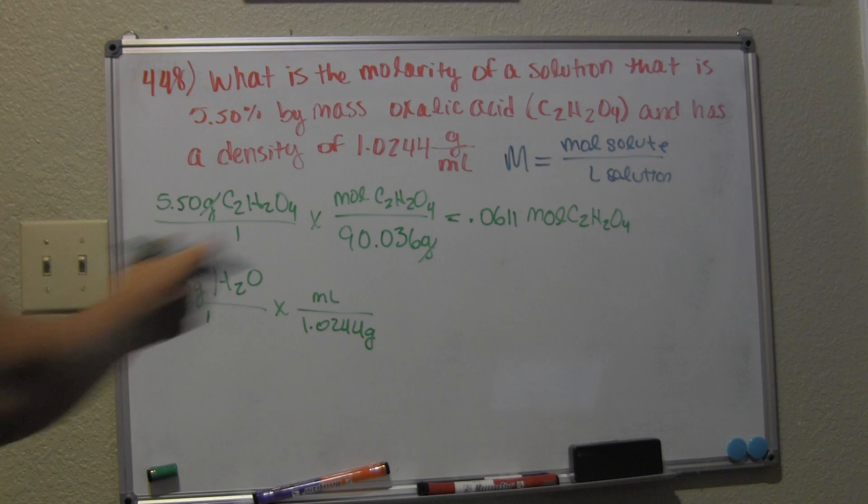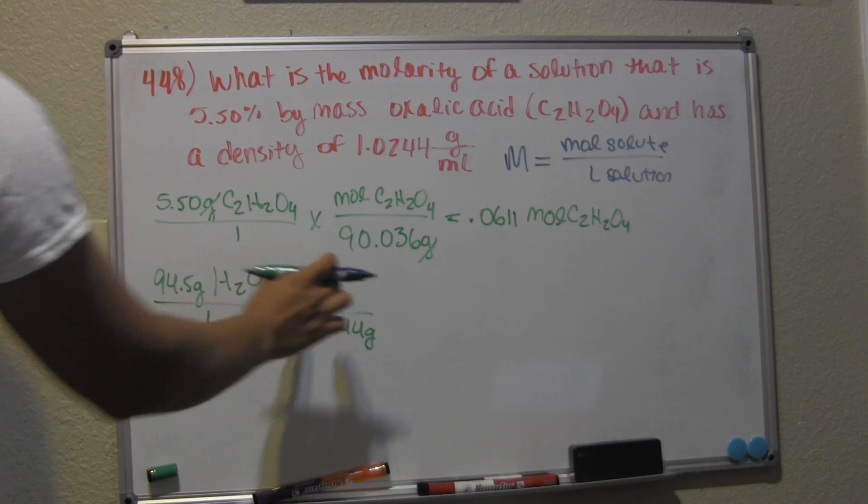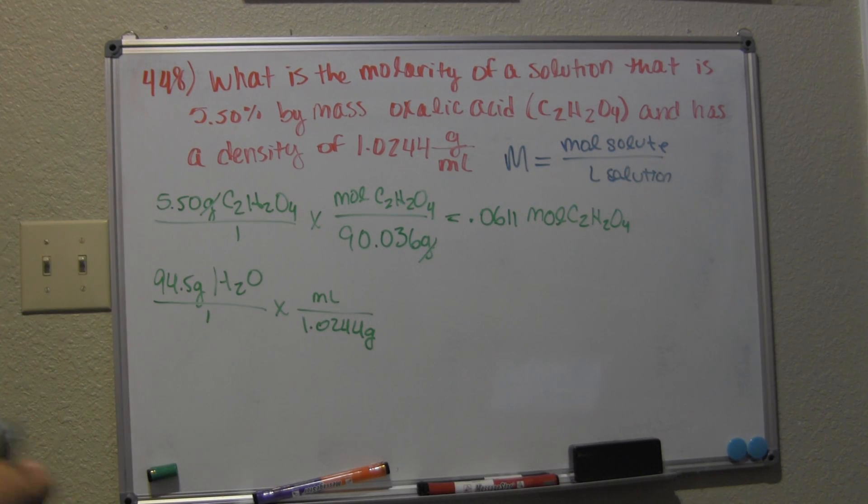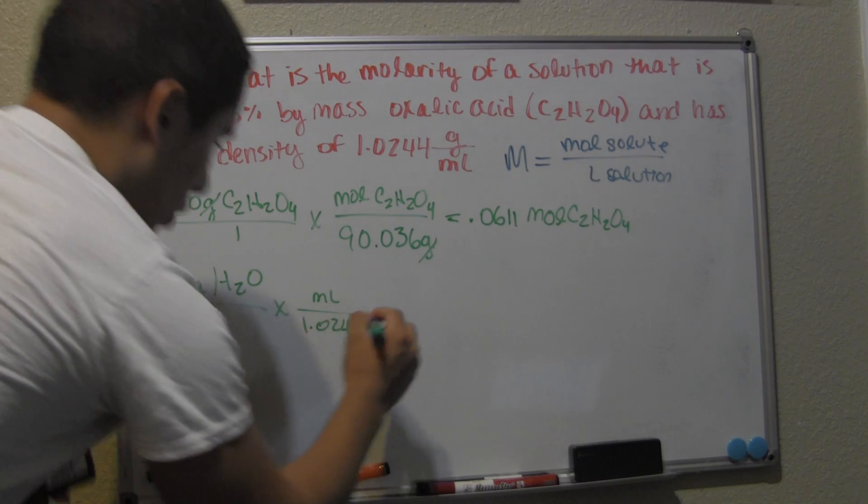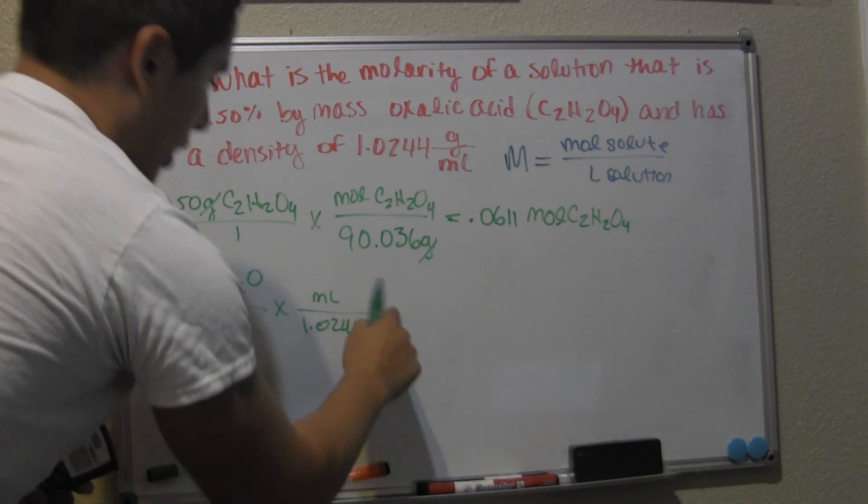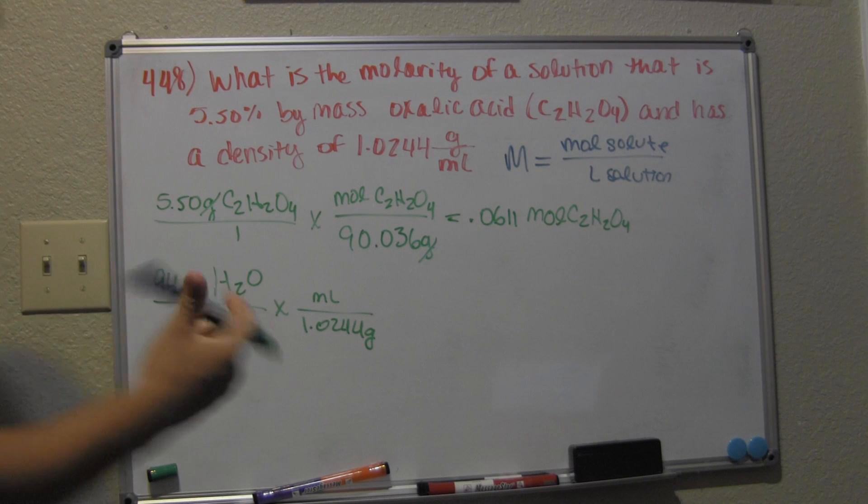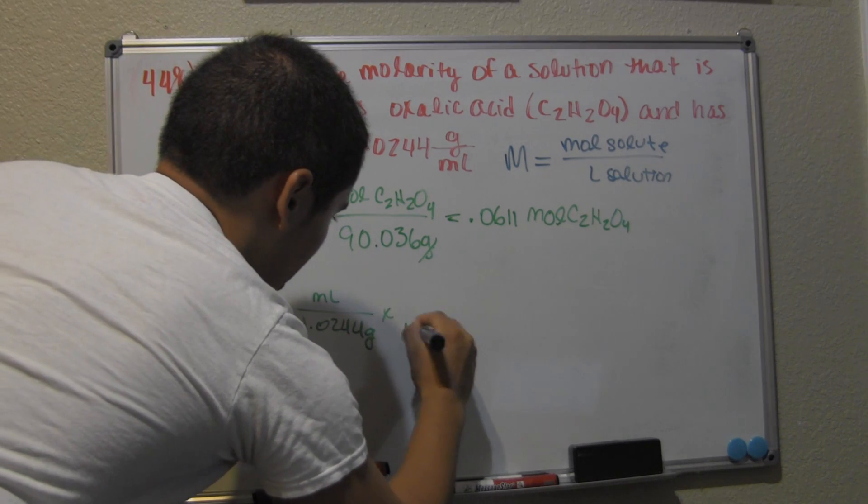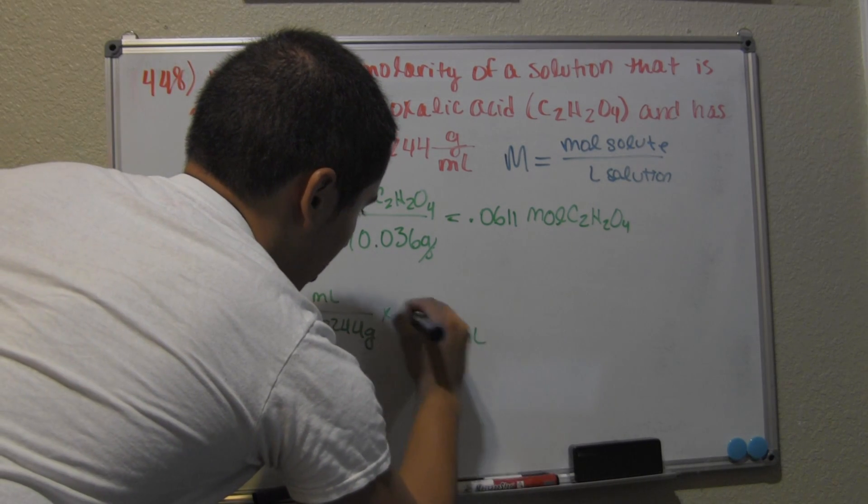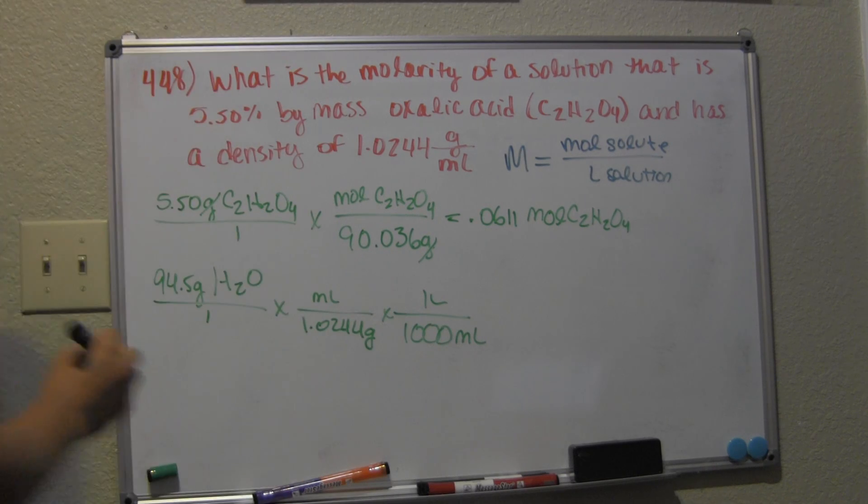We need to convert our milliliters into liters, so we multiply by 1000 milliliters equals one liter. Our grams cancel out grams, milliliters cancel milliliters, leaving us with liters, which is what we're looking for.